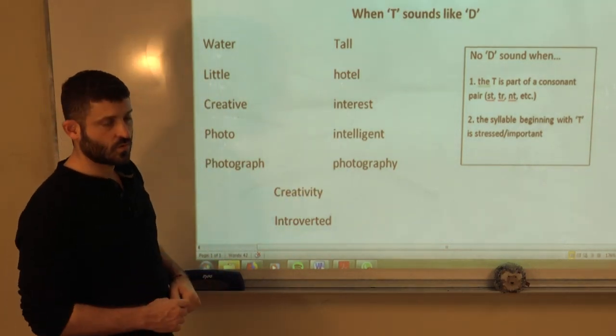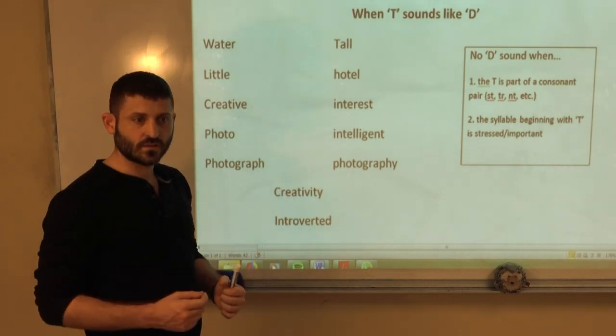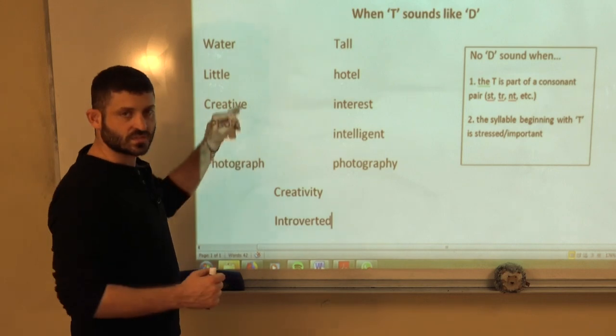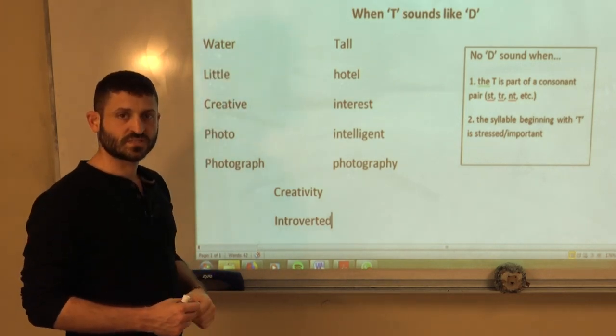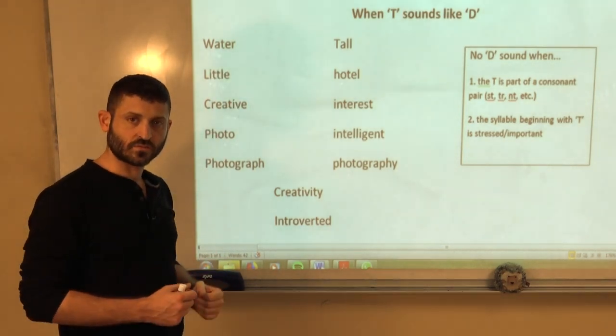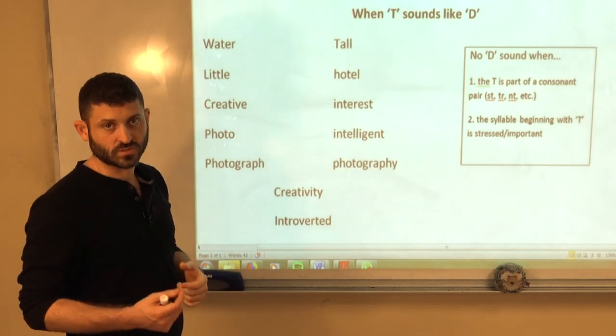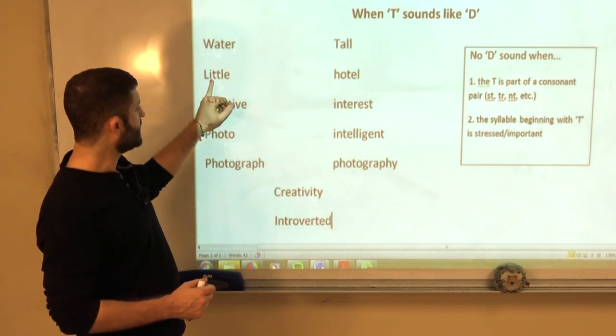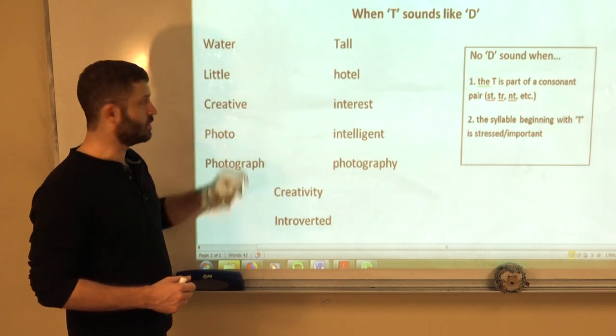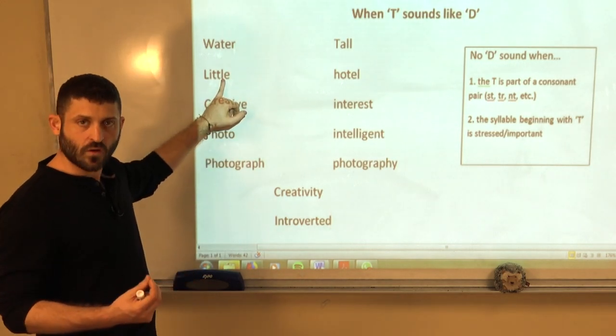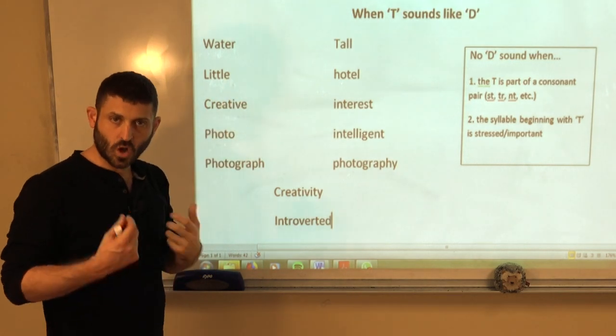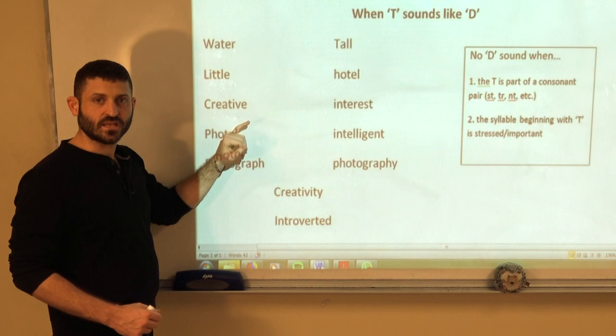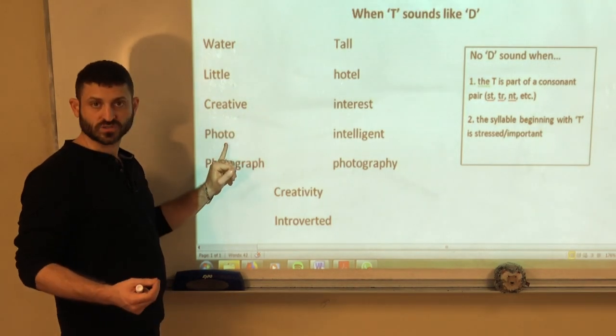Well, why is that the case? Well, in order for the T to sound like a D, some things must be present. The first is before and after the T you must have a vowel dominant sound. A vowel or a vowel dominant sound. A, ur. Water. I, ul. Little. Now, L is not a vowel. It's a consonant. But ul makes a vowel dominant sound. Creative. You have a and ih. And then, of course, o.